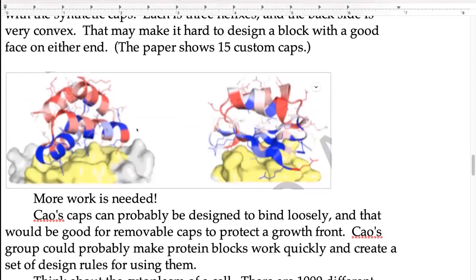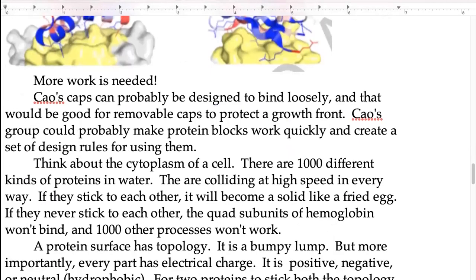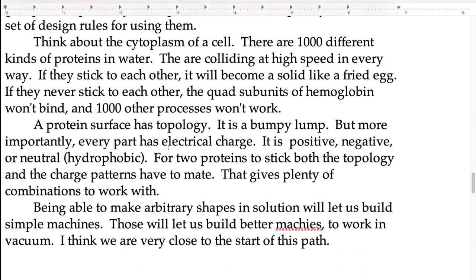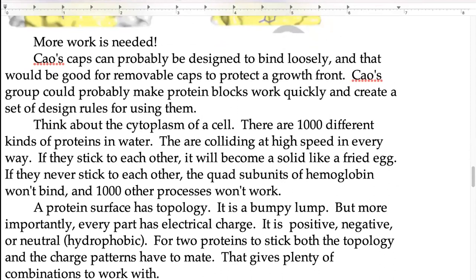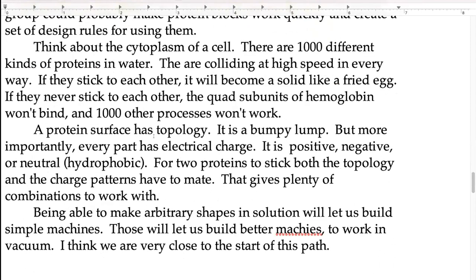If we could get the people who make these caps to make the right kind of caps, we'd be able to make arbitrary protein structures right now — with arbitrary functionalization — and make billions of them at the same time in a single pot, with control over where each block goes.